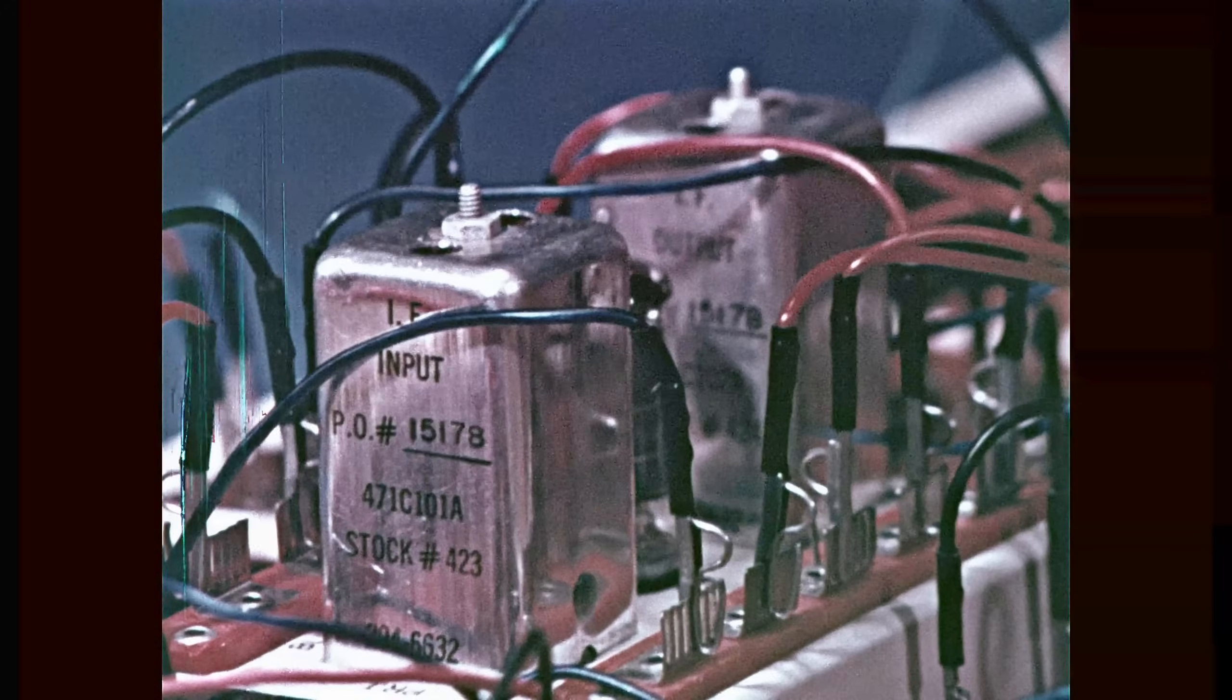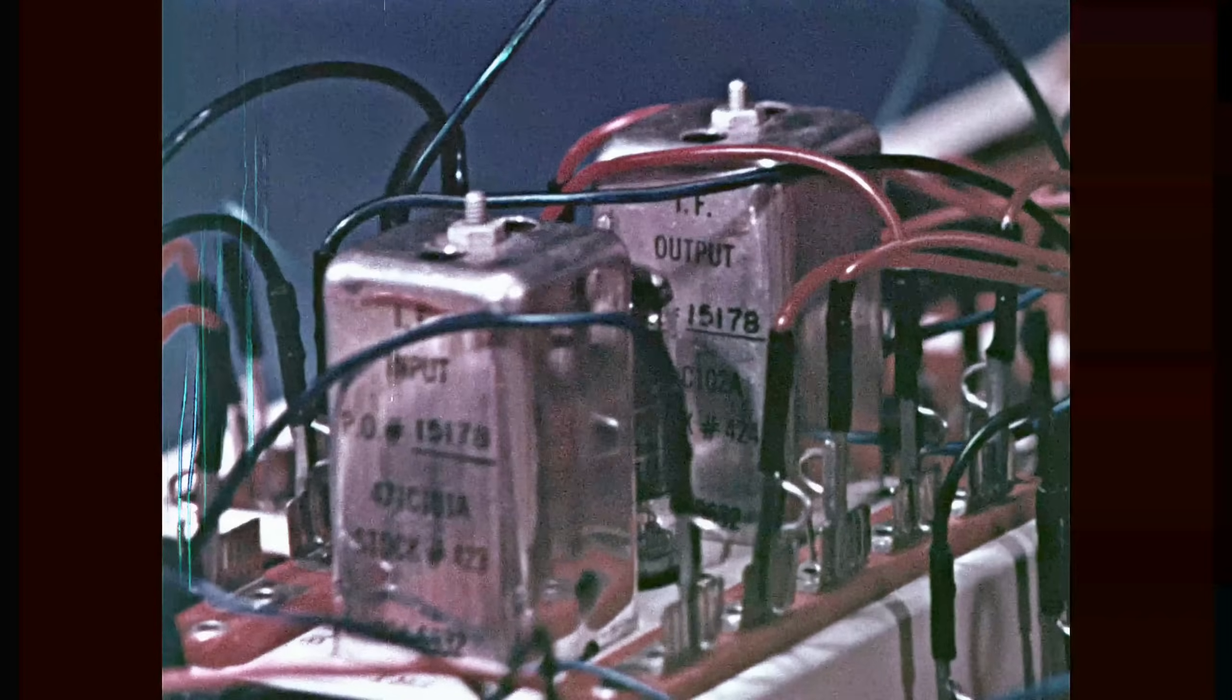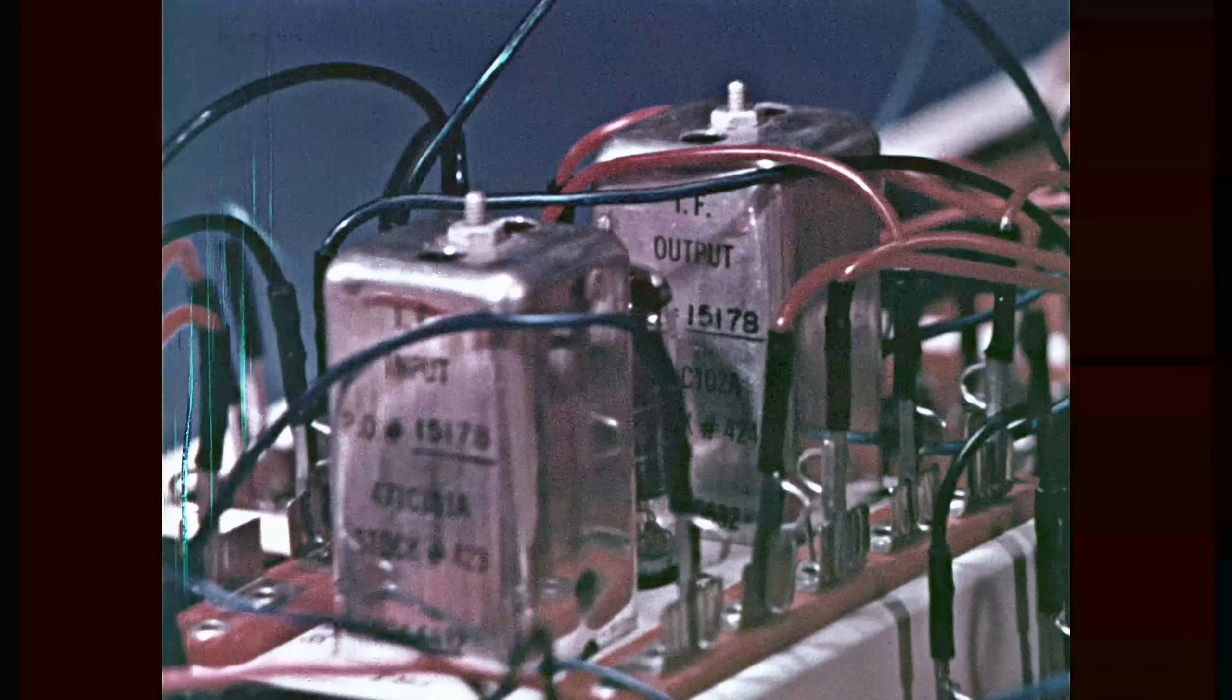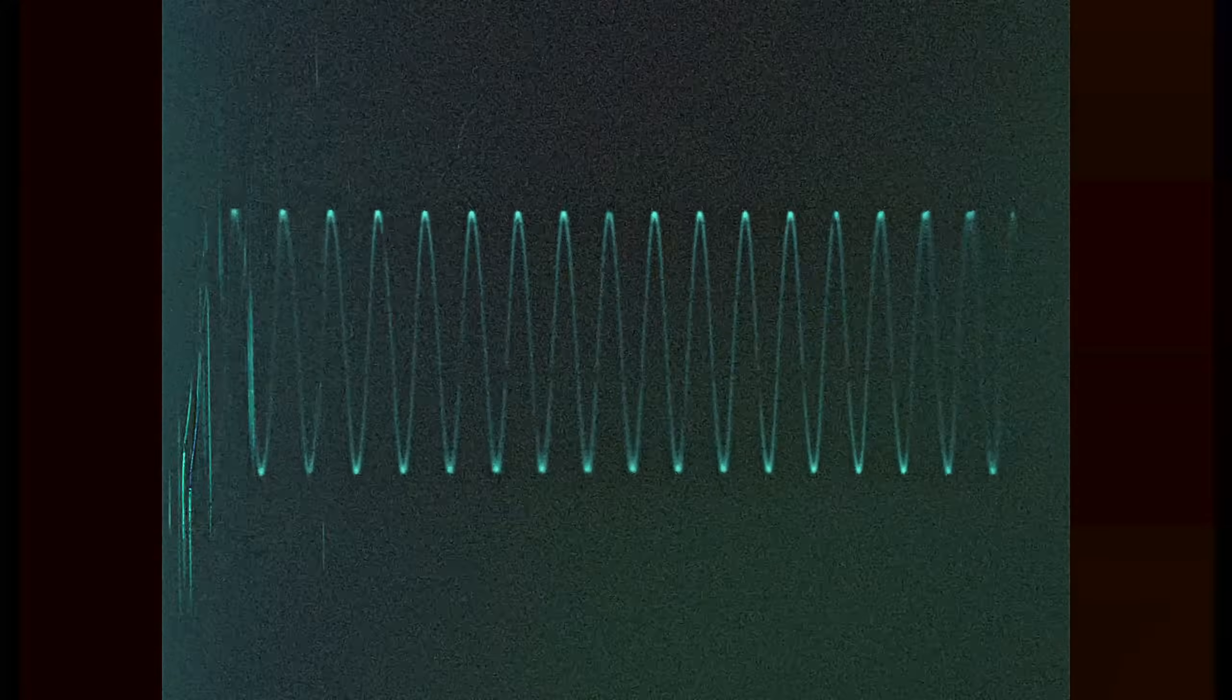With the first IF transformer set to accept the 455 kilohertz frequency and block all others, the IF amplifier tube amplifies it to many times its original strength. When the signal has been amplified, it's fed to the output transformer. Like the input transformer, the output transformer circuit is tuned to exactly 455 kilohertz. The IF transformers will provide top performance in your radio receiver.